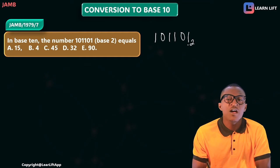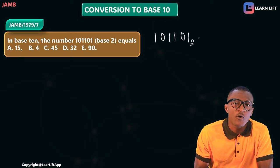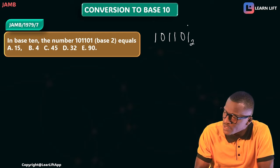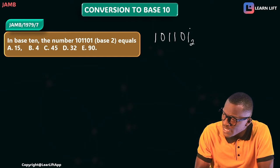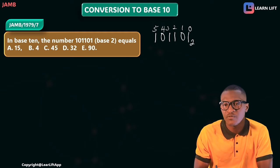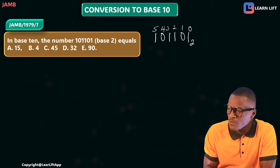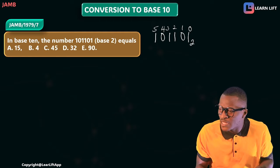We start numbering from the right-hand side: let this position be 0, the next be 1, the next be 2, the next be 3, the next be 4, and the leftmost be 5.